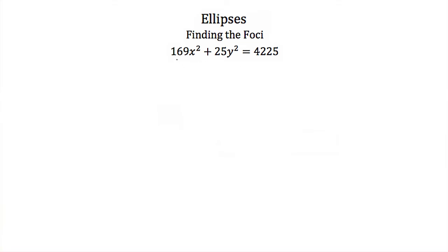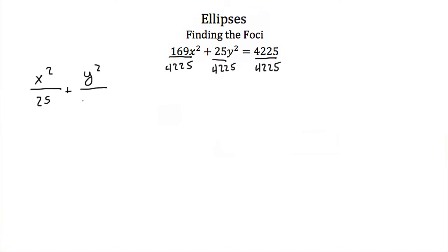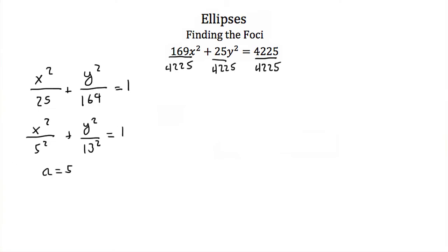Let's find the foci of the ellipse with equation 169x-squared plus 25y-squared equals 4,225. This is not in standard form, so divide everything by 4,225. We get x-squared over 25 plus y-squared over 169 equals 1. This is now standard form. Since 25 is 5-squared and 169 is 13-squared, we can write this as x-squared over 5-squared plus y-squared over 13-squared equals 1, so a equals 5 and b equals 13.